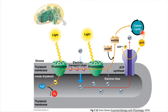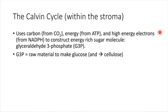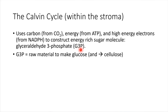In the Calvin cycle, molecules of CO2 are going to be used along with energy from ATP and those high-energy electrons from NADPH. Those three ingredients come together in the Calvin cycle and get built into a sugar molecule. Each of these carbons from carbon dioxide gets connected together to form a sugar molecule called glyceraldehyde 3-phosphate — G3P. This is a three-carbon sugar, and it acts as a building block. We can put two of these together in order to make a glucose molecule.